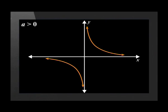So far we have the following. The curve we are sketching is a hyperbola because the x is in the denominator. The a-value is positive 2, so the two curves of the hyperbola appear in the first and third quadrants.